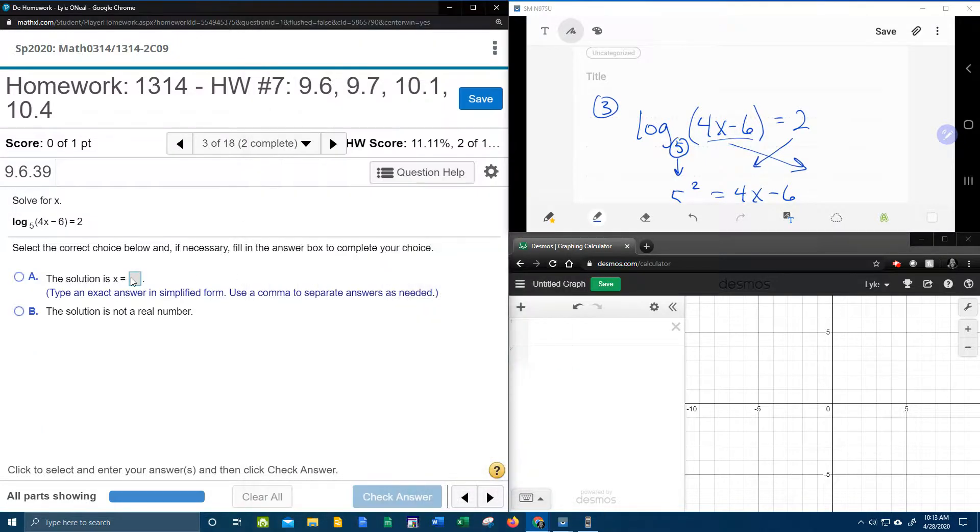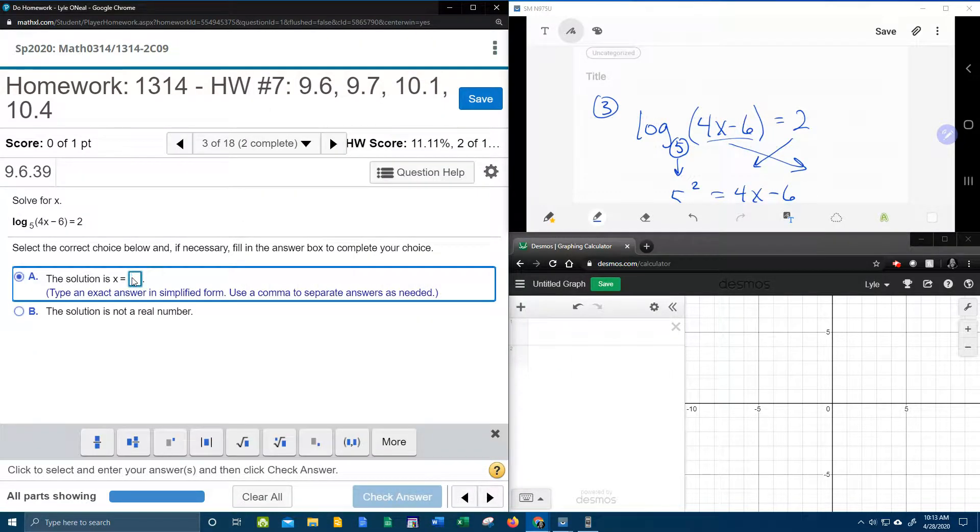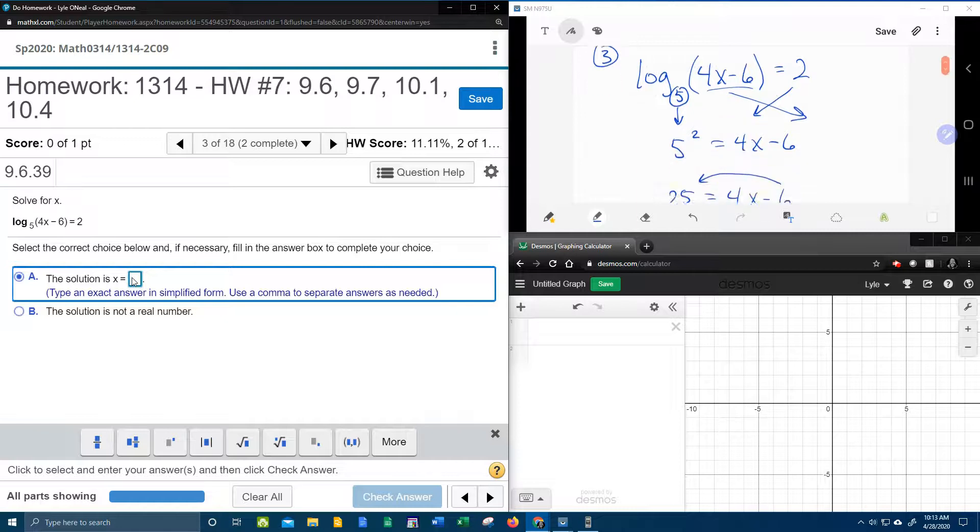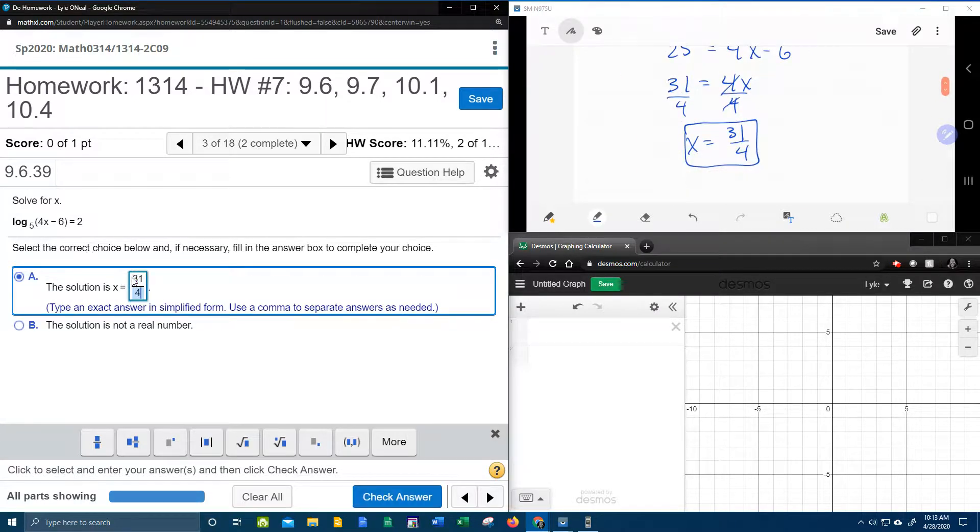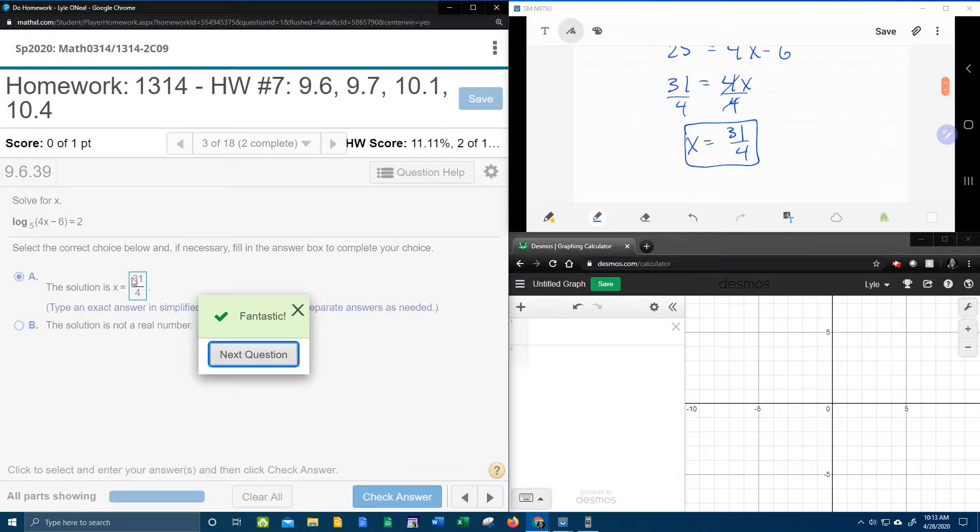There we go. So let's put that into MyLabMath. We've got, I'm sorry, what was it again? 31 fourths. Bam! I hope that was helpful. If you have any questions or comments, feel free to put them in the comments section below, or you can text me. And thanks for watching.